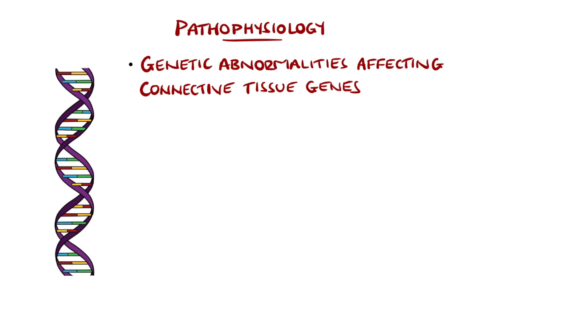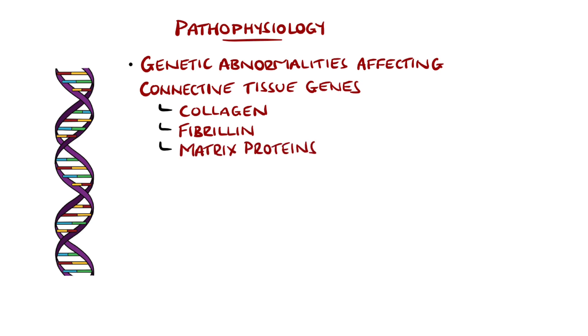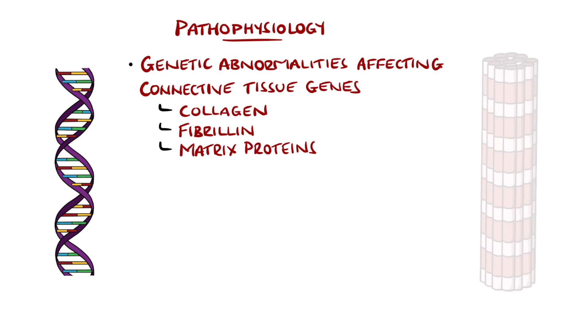Examples include collagen, fibrillin, and matrix proteins, and each subtype varies with which genes are involved and to what degree.